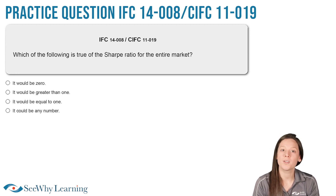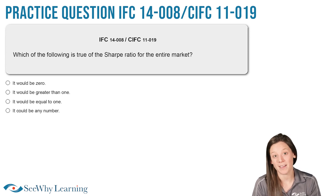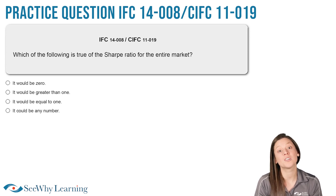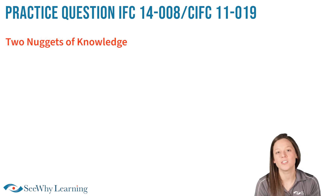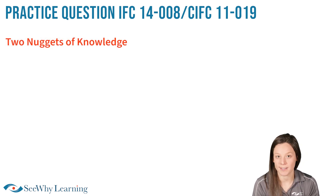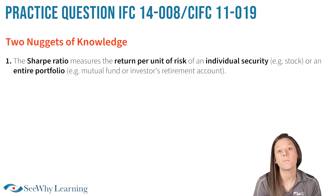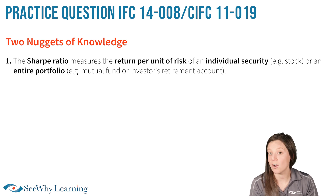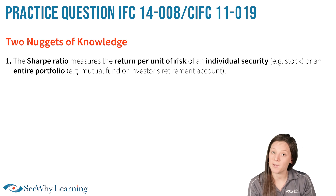That's okay. Always remember, when you're preparing for an exam, even if you get a question wrong, that's not necessarily a bad thing. Think of it as an opportunity to learn something new. There are two nuggets of knowledge that will help you answer this question correctly. Nugget number one: the Sharpe Ratio measures the return per unit of risk of an individual security, such as a stock, or of an entire portfolio, such as a mutual fund or an investor's retirement account.